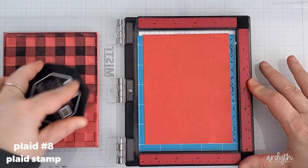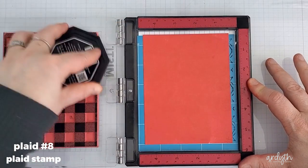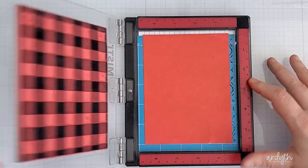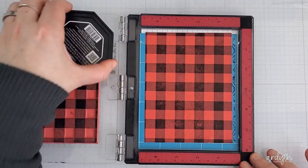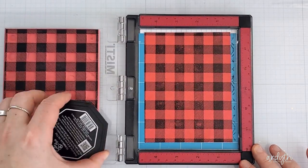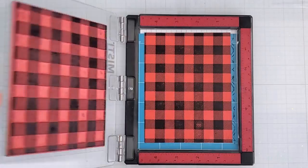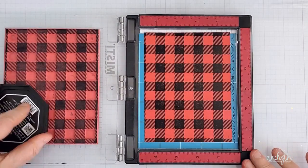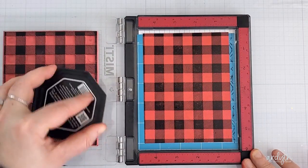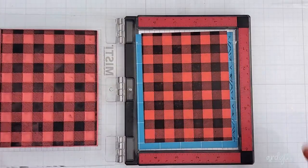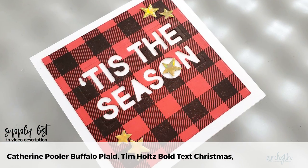Number eight is a plaid background stamp from Catherine Pooler, also retired and a favorite of mine since it's a classic buffalo plaid. I went with classic buffalo plaid colors and I stamped it in black onto my red panel. This is probably the easiest one as long as you only want one color on your plaid design.